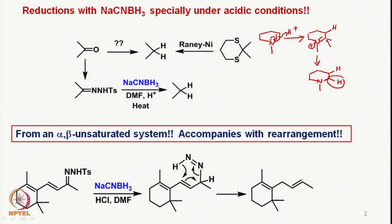One of the last examples we took was how to convert a carbonyl group to the corresponding hydrocarbon, where both hydrogens are essentially coming in during the sodium cyanoborohydride reduction. One way, as we discussed, was to convert the carbonyl group to a dithiane protection and then do the Raney nickel cleavage where the carbon-sulfur bonds get cleaved. On the other hand, if we use sodium cyanoborohydride, we convert the carbonyl group to the corresponding tosyl hydrazone, which under acidic conditions in DMF in the presence of sodium cyanoborohydride gives the corresponding hydrocarbon.